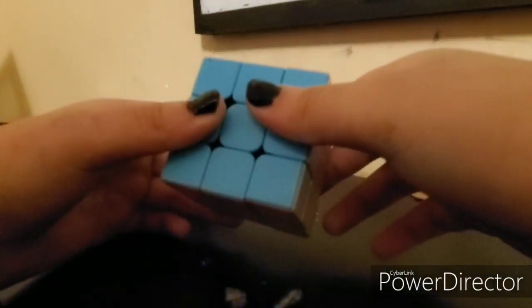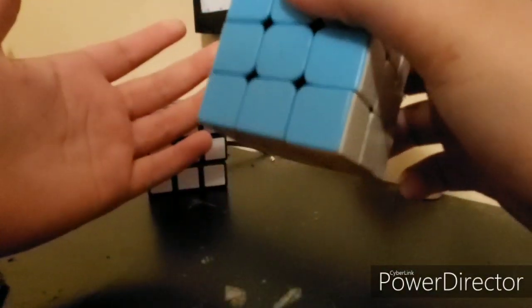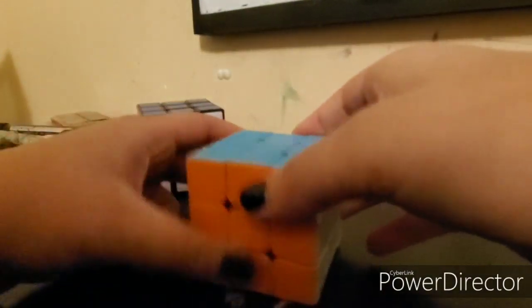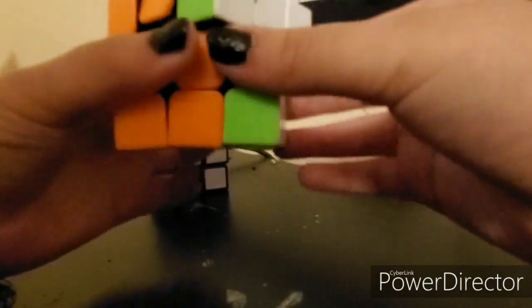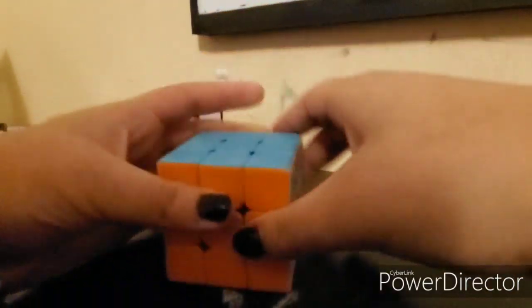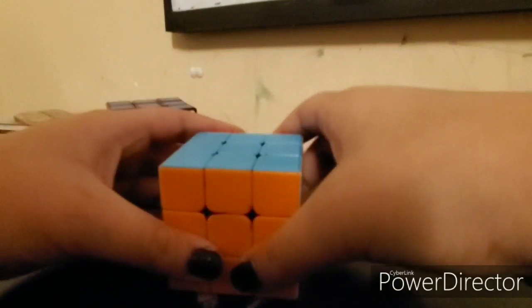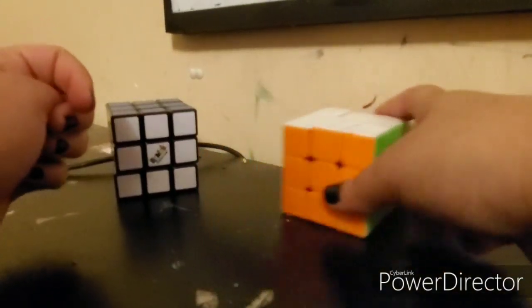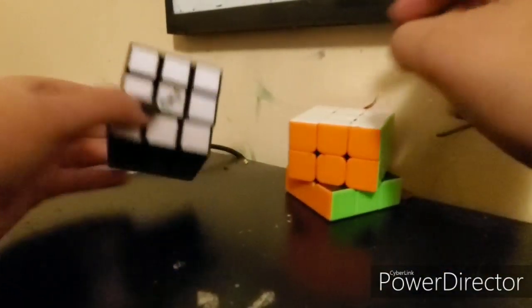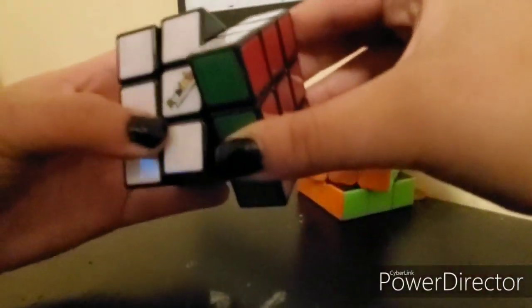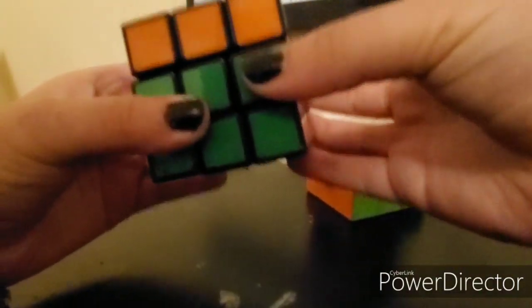I'm also going to do a video on what non-cubers say and what cubers should never say, like 'is that a 10x10?' The bad thing about my main is it pops a lot - never take it to a competition. But this Rubik's cube is absolutely horrible.